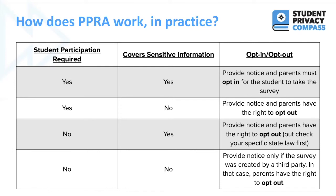In a survey where student participation is required but it does not cover sensitive information, you must still provide notice, but parents here have the right to opt-out. In a survey where student participation is not required but it will cover sensitive information, parents have the right to opt-out — note that you should check your specific state law first, and again make sure you're providing notice. In a survey where student participation is not required and it will not cover sensitive information, you must provide notice only if the survey was created by a third party, and in that case parents have the right to opt-out.